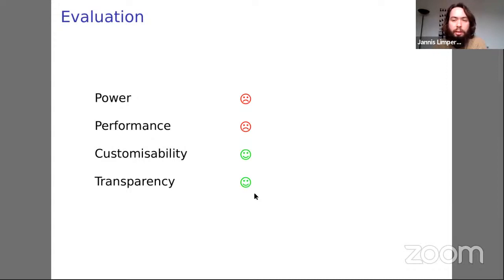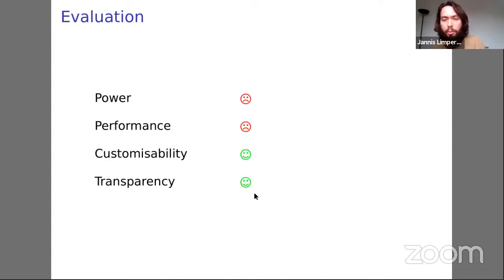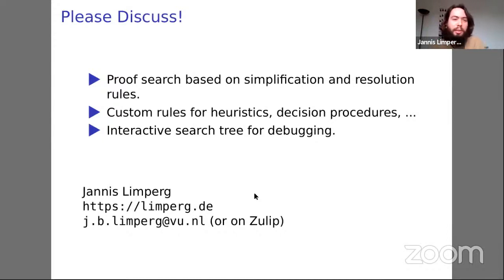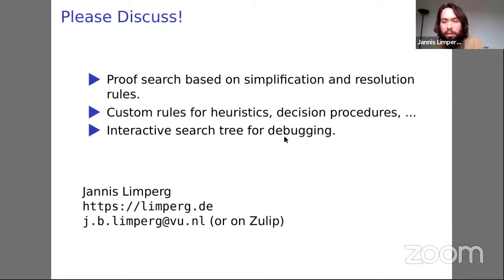I'm not arguing against SMT integration at all — SMT solvers can be very nice when you give them a goal and they just prove it. With this tactic, you have to do significant setup and tagging. There are certainly trade-offs; ideally we should have both. To summarize: we do proof search based on simplification and resolution rules, have custom rules for heuristics and decision procedures, and want an interactive search tree for debugging.